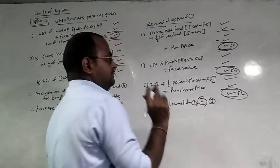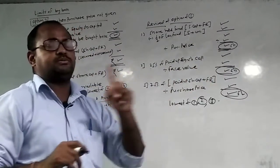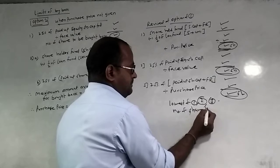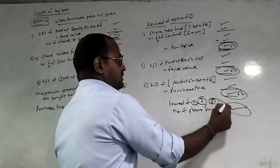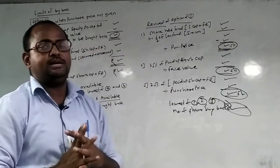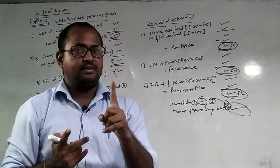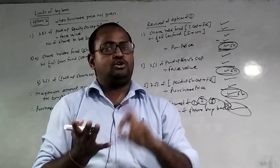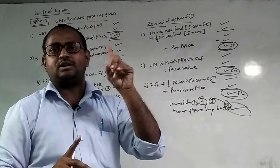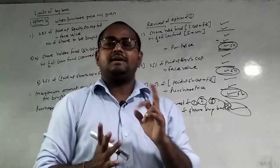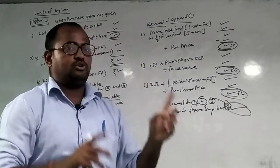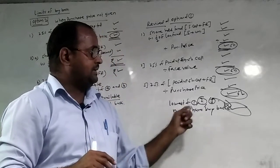One, two, three — the lowest of the three is selected: number one, number two, number three. That lowest number is the number of shares to be bought back. The company will buy back that number of shares. Shares can then be applied. The second option is 25% of paid-up equity capital divided by face value. The third option is 25% of paid-up share capital plus reserves, divided by purchase price.